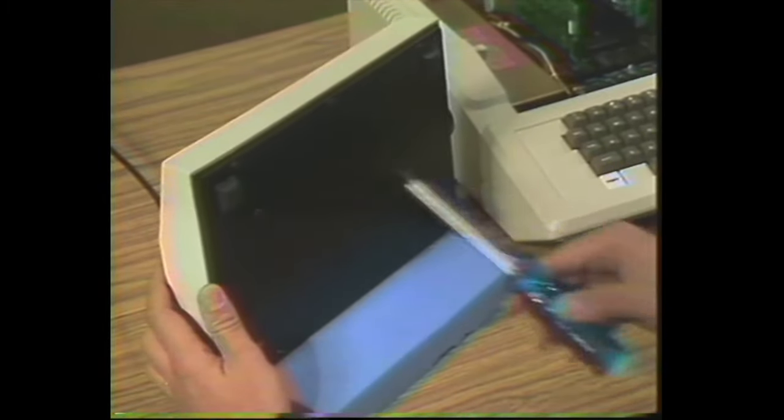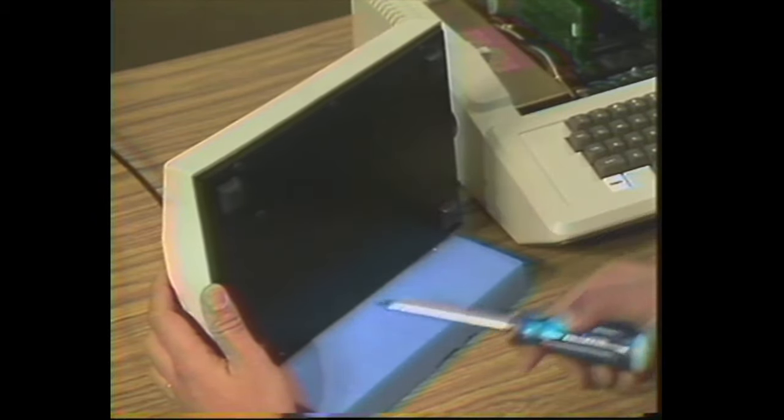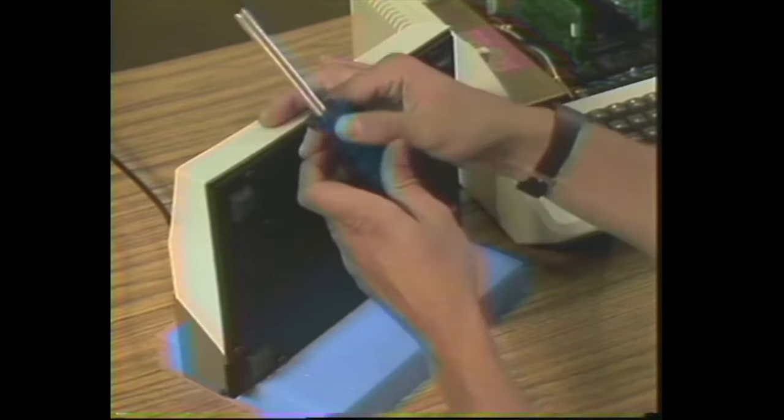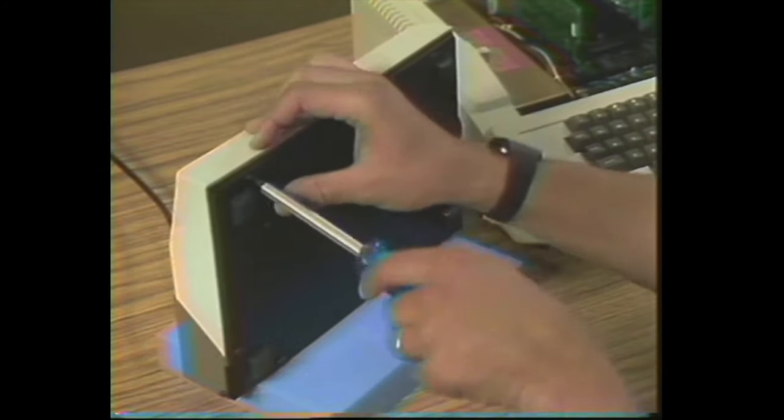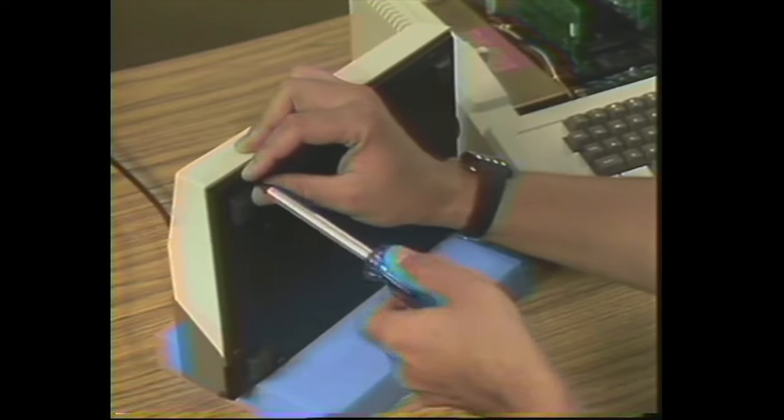Those five screws are located here, here, here, here, and here. Those are the screws for just the cover. We'll go ahead and take these out. Incidentally, you need a special screwdriver - it's called a torx screwdriver, just like this one - to remove these screws.